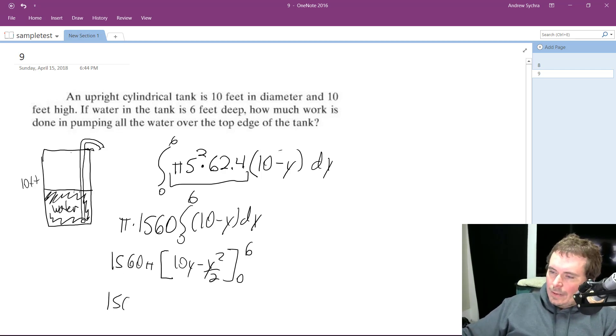So 1560π. The nice thing about 0 is it just cancels out, so we get 60 minus 36/2. So 36/2 is 18, so that becomes 60 minus 18 is 42.